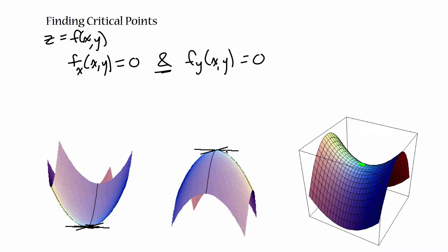Same thing with this local maximum here — the derivative in the x direction is zero, and in the y direction it's also equal to zero. And over here, this is a third kind of critical point, equivalent to boring inflection points. This is a saddle point, so named because this really obviously looks like a saddle if you've ever been near a horse.